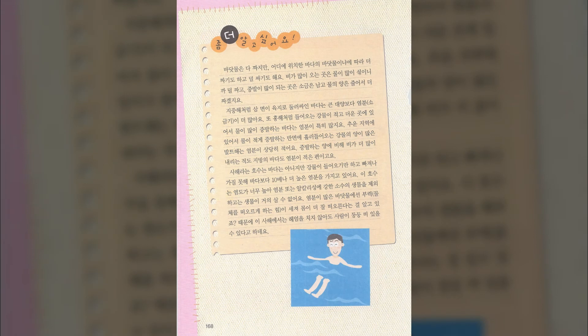The ocean is salty because it picks up salt from the ground. There is a lot of salt in minerals, rocks, and sand. When rivers run into the ocean, they pick up salt from these things. The ocean collects and keeps salt from all the rivers. That's why the ocean is salty.